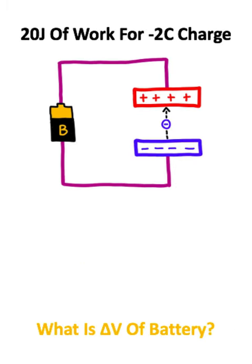I find problems like this to be fun to solve. So in this problem, it takes 20 joules of work to move a negative 2 coulomb charge from a negative plate to a positively charged plate. Given this information, what is the voltage of the battery connecting the two plates?